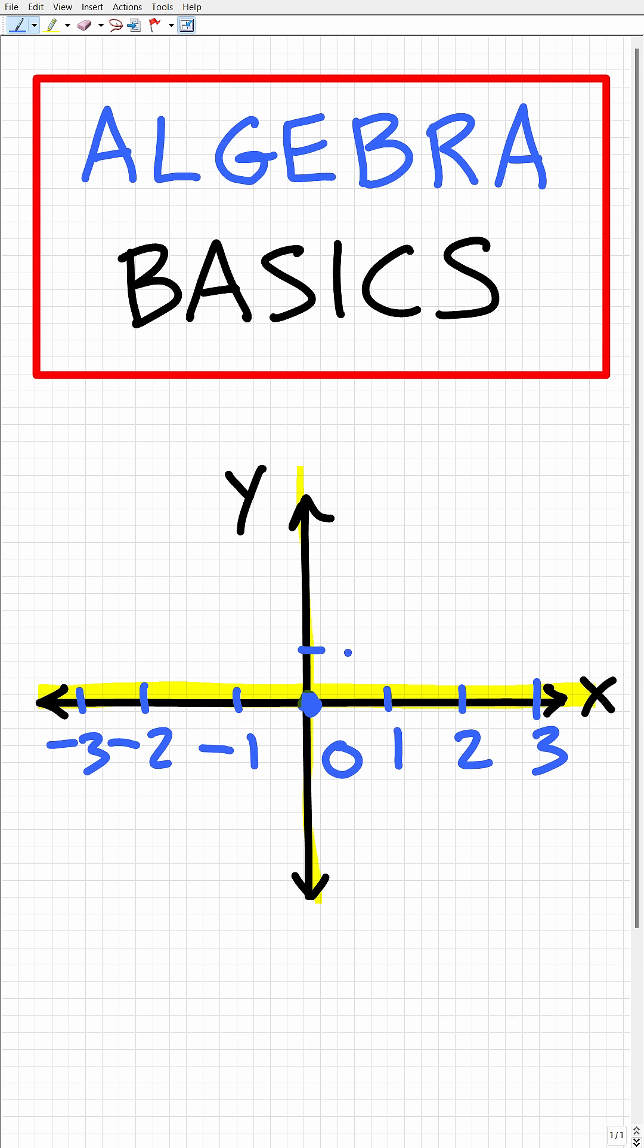On the y-axis, same thing. We increase going upward: this is one, this is two, this is three. Going down in this direction, we have negative one, negative two, negative three on the y-axis.